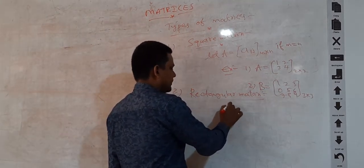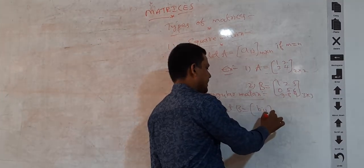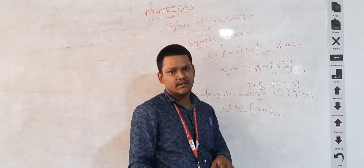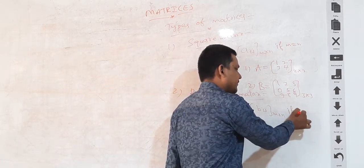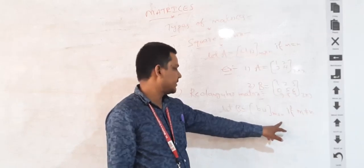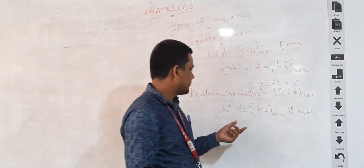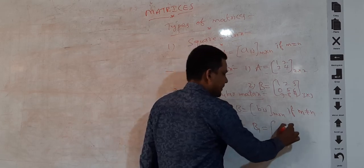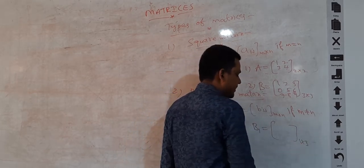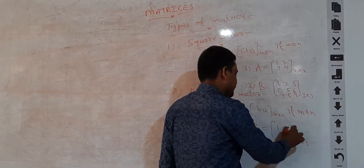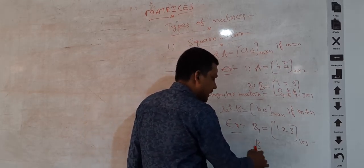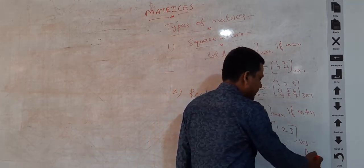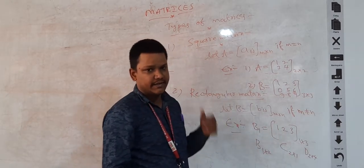Next is the rectangular matrix. Let B be a matrix with elements of the form B-i-j of order m by n. A matrix is rectangular when the number of rows is not equal to the number of columns — that is, if m is not equal to n, then matrix B is said to be a rectangular matrix. For example, B1 is a matrix of order 1 by 3, consisting of 1 row and 3 columns, with elements 1, 2, 6. We can also define matrices B of order 1 by 2, C of order 2 by 1, and D of order 2 by 4 — all are examples of rectangular matrices.